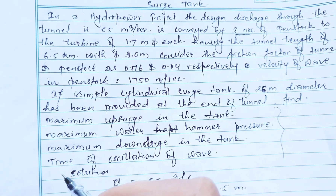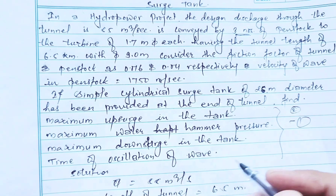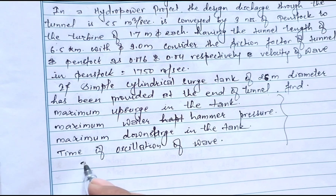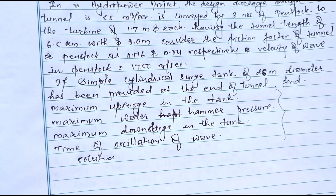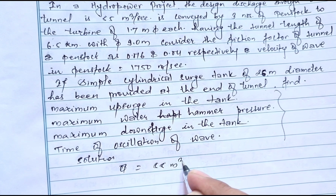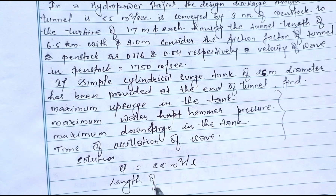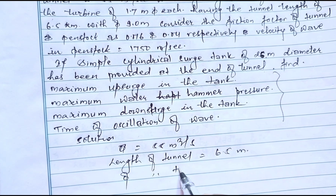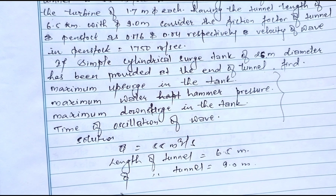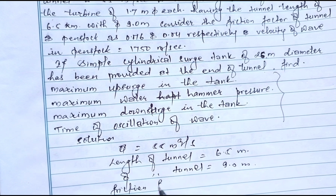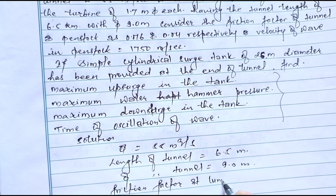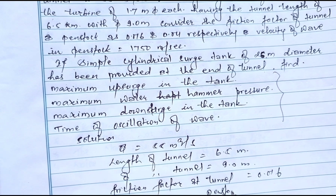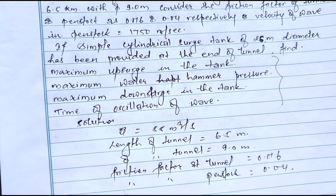We will first find the maximum water hammer pressure, then the maximum upsurge condition, then the maximum downsurge condition, and finally the time of oscillation. The given data: discharge Q = 55 cubic meters per second, length of tunnel = 6.5 km, diameter of tunnel = 9.0 m, friction factor of tunnel = 0.016, friction factor of penstock = 0.04.